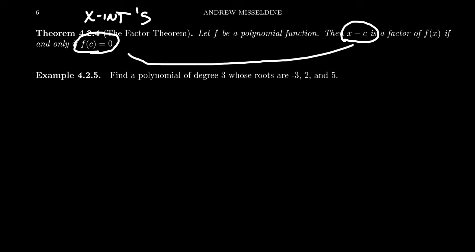But it turns out we can also go the other way around. We can build polynomials by knowing their x-intercepts. Or for polynomials, the x-intercepts are often called the roots of the polynomials. So if I say the root of the polynomial, that means these are its x-intercepts. So can we find a polynomial of degree 3 whose roots are negative 3, 2, and 5?